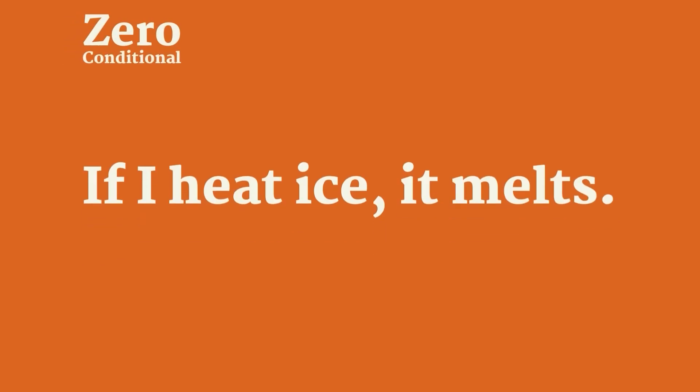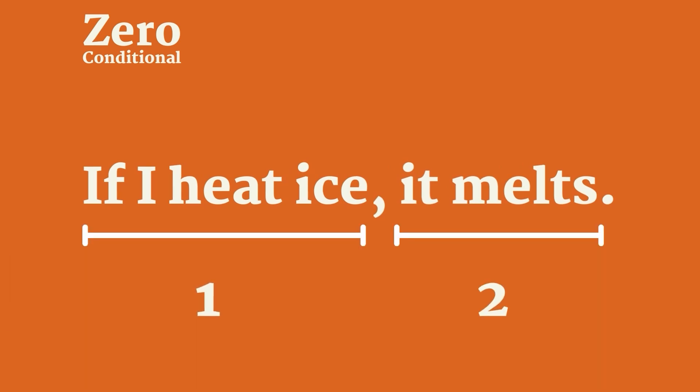For example, if I heat ice, it melts. Notice there are two clauses: the conditional clause at the beginning, "if I heat ice," and the result, "it melts." Notice that they're both in the present. Zero conditionals are always structured this way — the if clause is in the present and the result is in the present. If it rains, the ground gets wet.